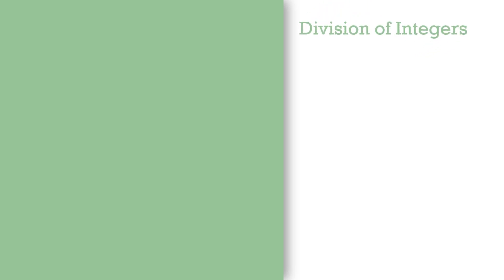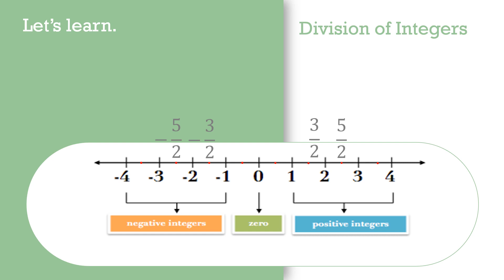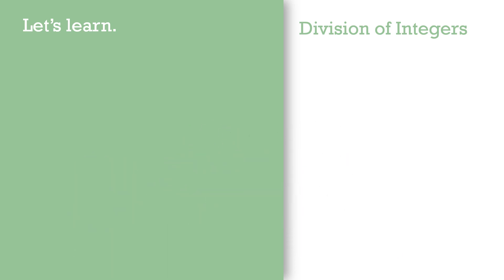Division of integers. We have learned how to divide one positive integer by another, and we know that the quotient of such a division may be an integer or a fraction. On the number line, we can show negative integers on the left of zero, and we can also show parts of integers. For example, minus 5/2, minus 3/2, 3/2, and 5/2 are shown on the number line. Note that minus 1/2 and 1/2 are mutually opposite numbers.